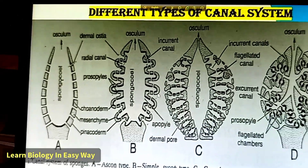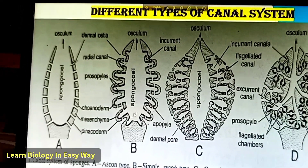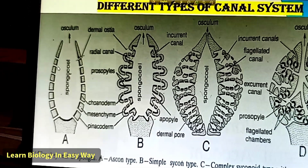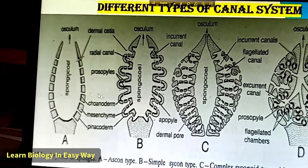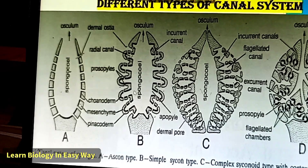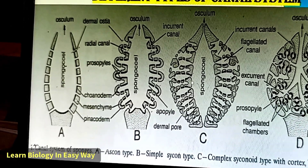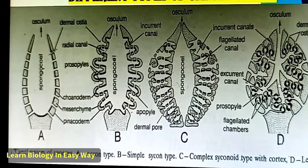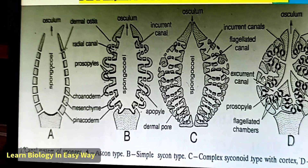This is a picture of different types of canal system. This is Ascon type, this is Sycon type, this is Complex Syconoid type, and this is Leucon type.